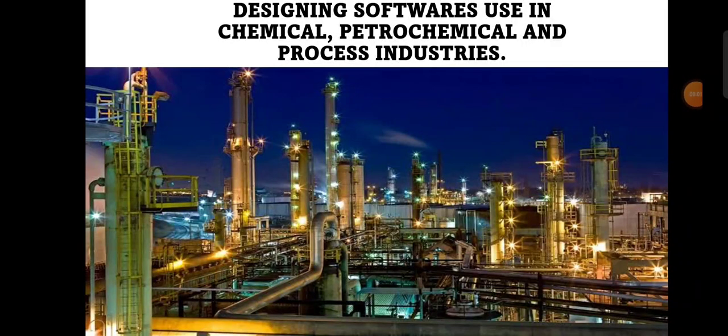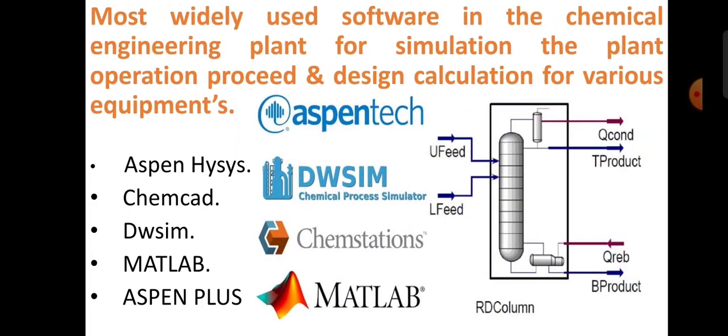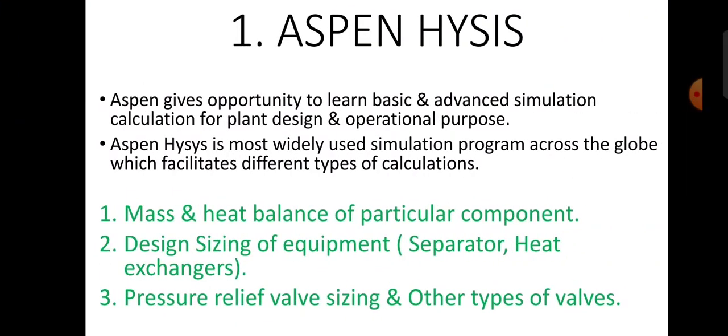Hello, dear friends. This is Gurukul Studies channel, and in this video we'll learn about detailing software used in chemical, petrochemical, and process industries. The most widely used software in chemical engineering plants for simulation, plant operations, process and design calculations are: Aspen HYSYS, CHEMCAD, DWSIM, MATLAB, and Aspen Plus.